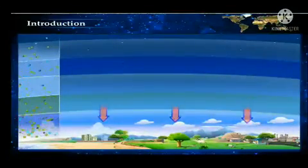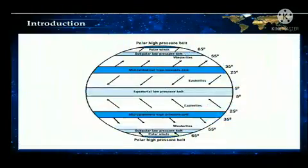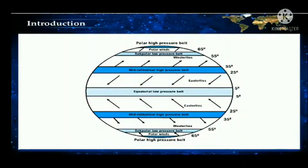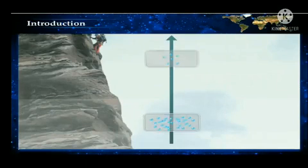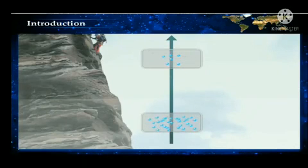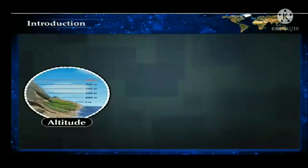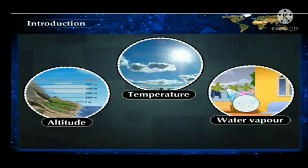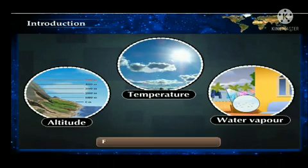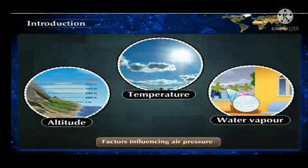There are variations in air pressure. It is not uniform in all places. On the earth's surface, it keeps on changing from time to time. The altitude of the region, the temperature of the air, and the water vapour in the air are some factors influencing the air pressure.